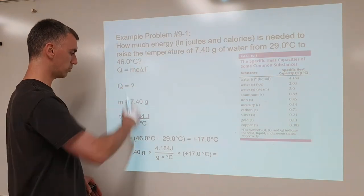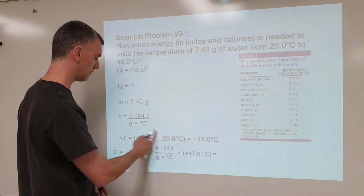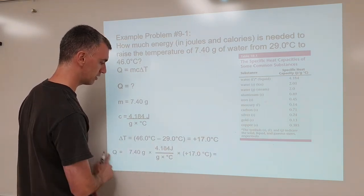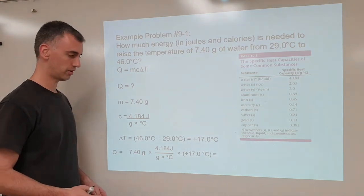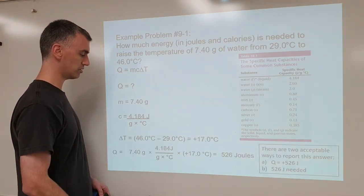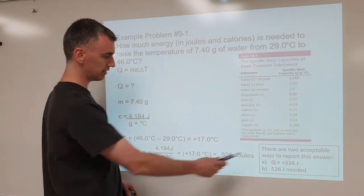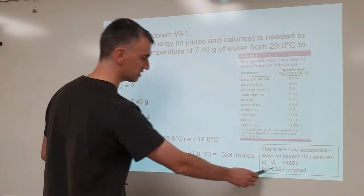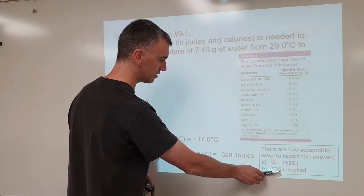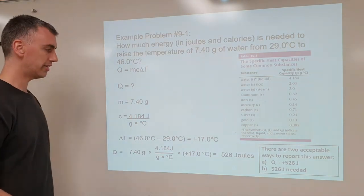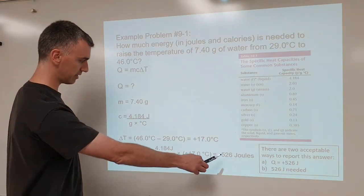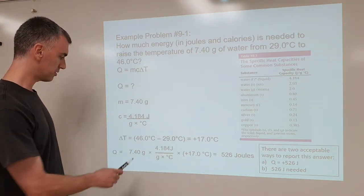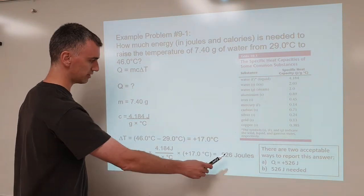Show all your work. No credit will be given if you don't show your work for delta T, and no credit if not showing units. The math comes out to 526 joules. We can write it either as Q equals positive 526 joules, because it's positive, which means it's gained, or we could say 526 joules gained, needed, or absorbed. This is rounded — it comes out to a messier number, but there are three sig figs in the given data, so three sig figs in the answer.